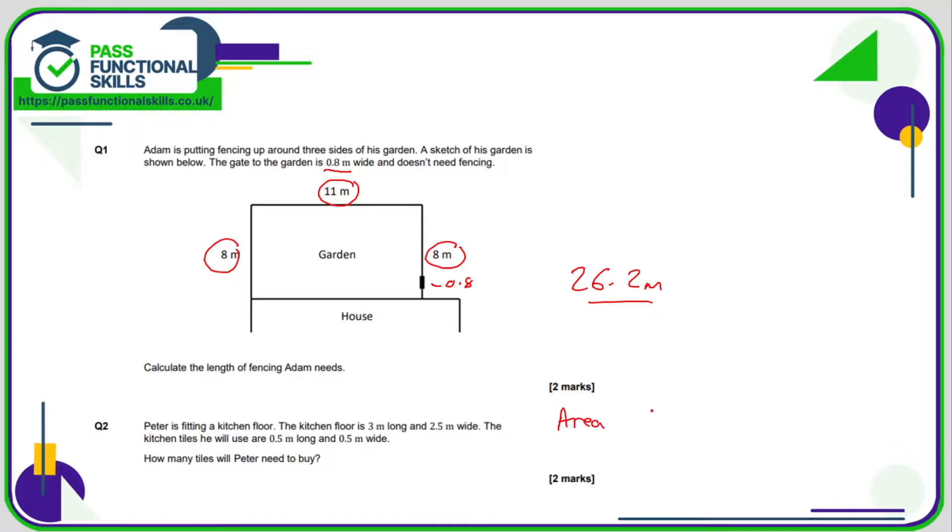The area of the floor is simply 3 multiplied by 2.5, so that's 7.5 square meters. The area of a tile is 0.5 times 0.5, which is 0.25 square meters. Some of you might not like that answer, but when you're multiplying by a number that is less than 1, then it will result in a smaller amount. So if the floor is 7.5 and each tile is 0.25, well, how many 0.25s go into 7.5? The calculation is 7.5 divided by 0.25, and that is 30. Therefore, Peter needs to buy 30 tiles.